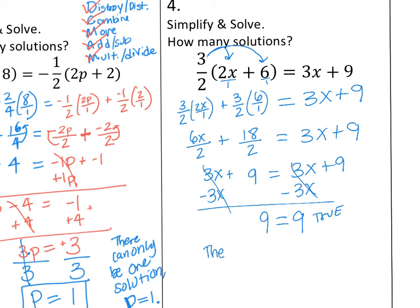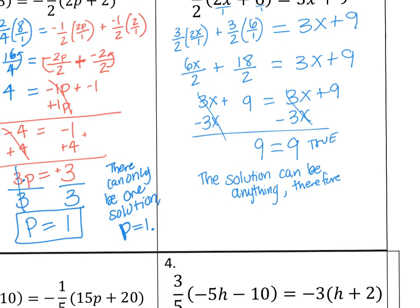When you get something like this, the solution can be anything. Therefore, there are infinitely many solutions. That is an actual answer in math. There could be infinitely many solutions. Therefore, there are infinitely many solutions.